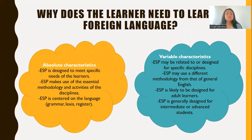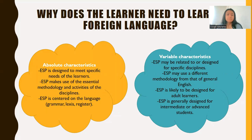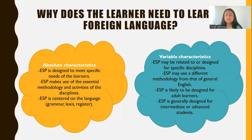As teachers we must know why the learner needs to learn a foreign language, and this is why we have some characteristics of the ESP course. We have two classifications: absolute characteristics and variable characteristics. In the absolute characteristics, an ESP course is designed to meet specific needs of learners, it makes use of the essential methodology and activities of disciplines, and ESP is centered on the language — meaning grammar, lexis, and register.